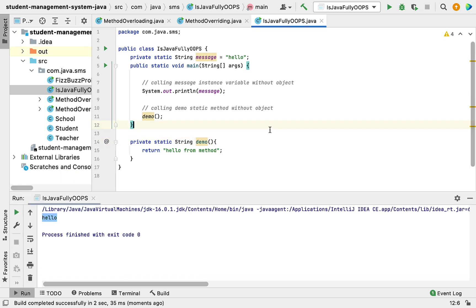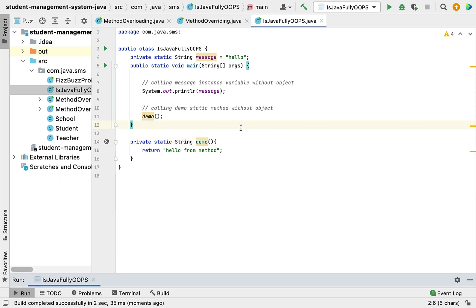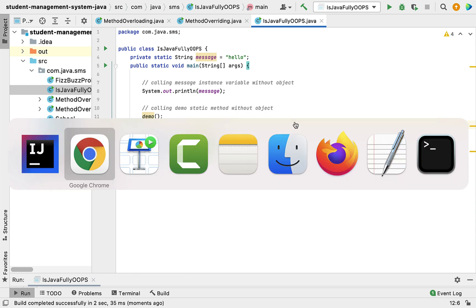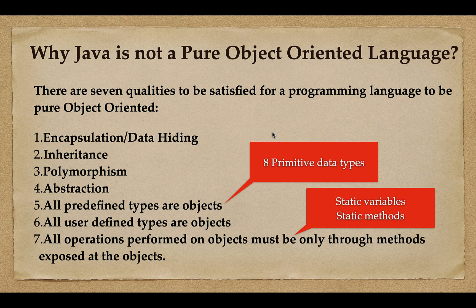If I run this program it should work — there we go. So these are the two major reasons why Java is not a fully object-oriented programming language. In an interview, make sure you provide this kind of explanation. I hope you understood why Java is not a fully object-oriented programming language, and I've demonstrated it with examples.